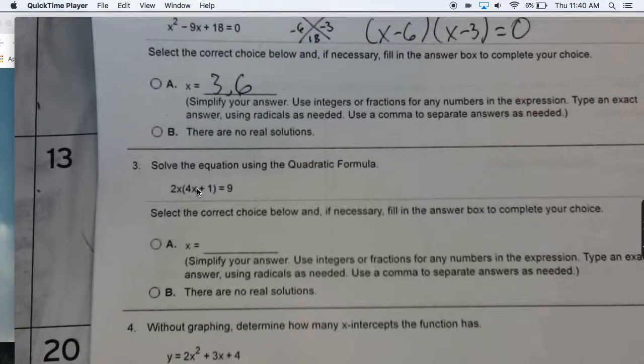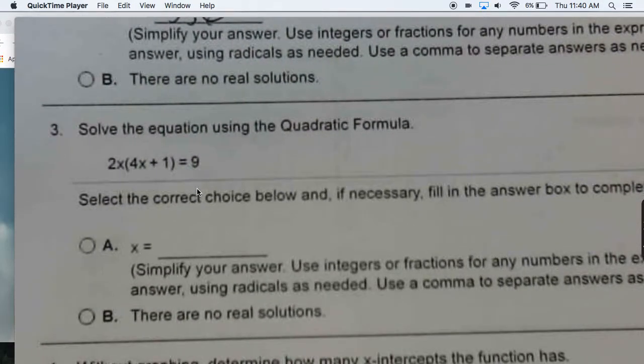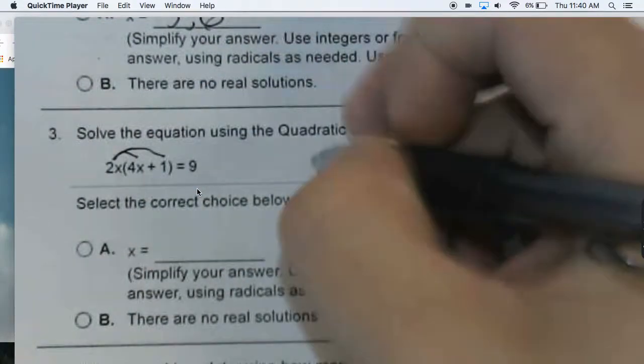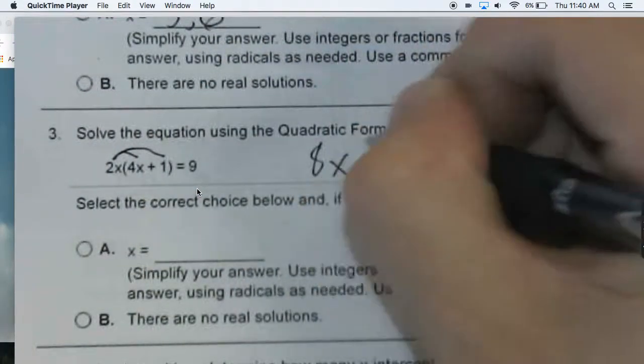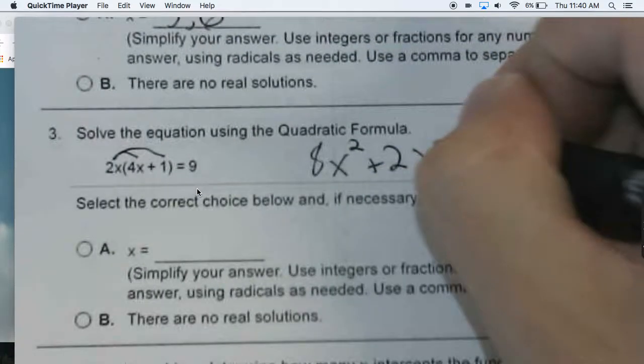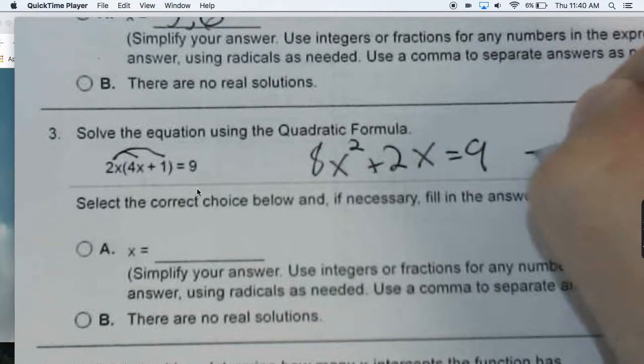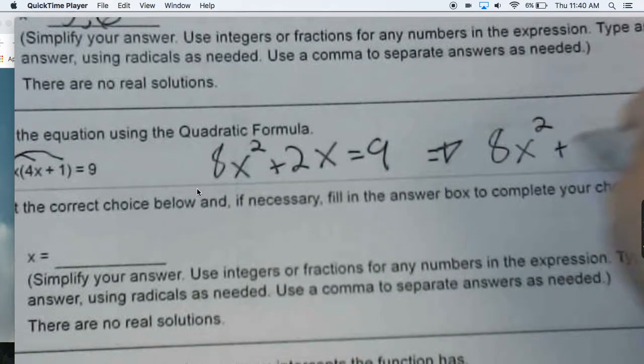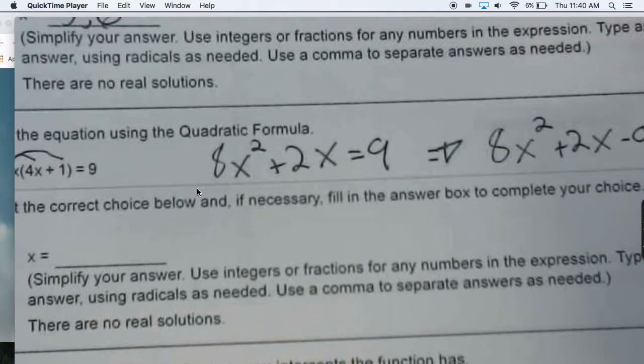With the next problem, you do have to get all three terms on the same side. I know the arithmetic here can be tricky, so make sure you distribute first. This will give you 8x squared plus 2x equals 9. But keep in mind, you want all three terms on the same side. So rewrite this, 8x squared plus 2x minus 9 equals 0.